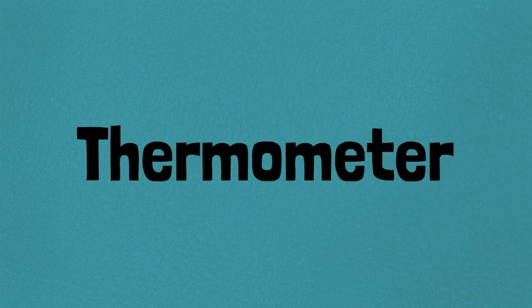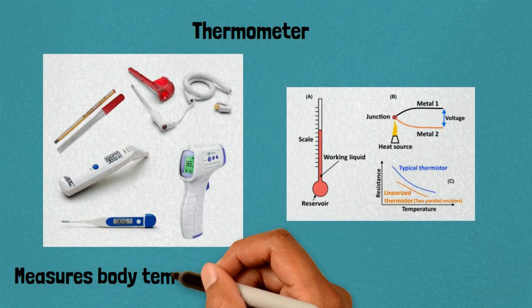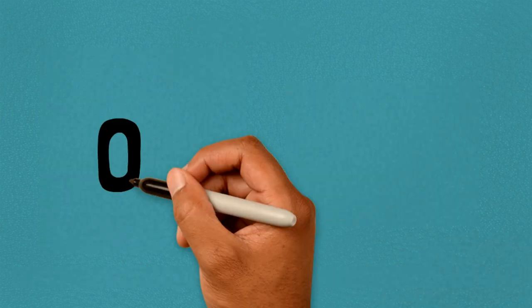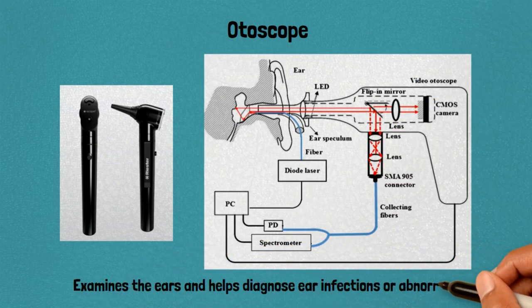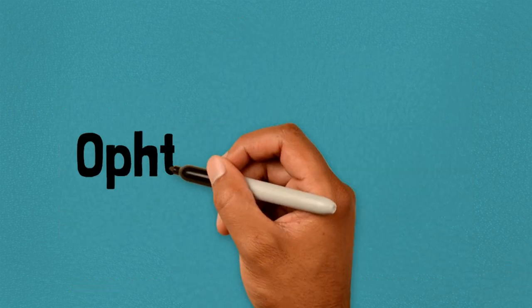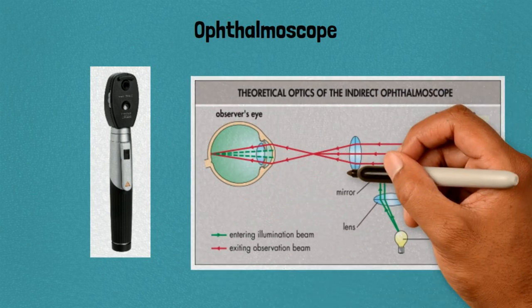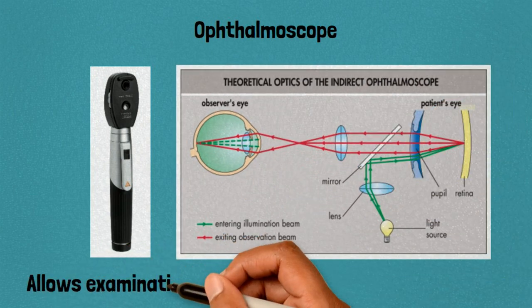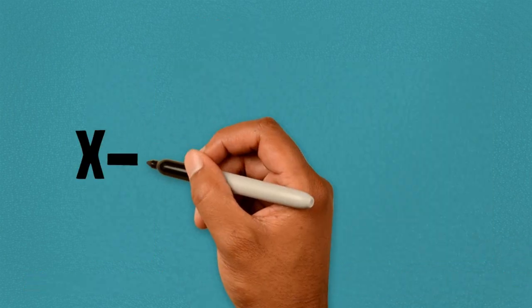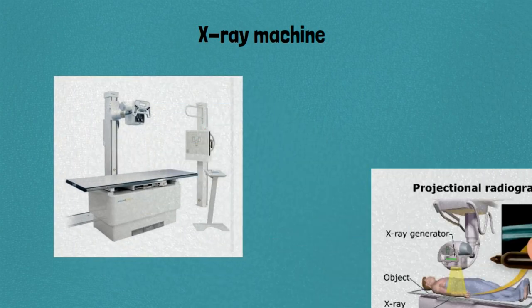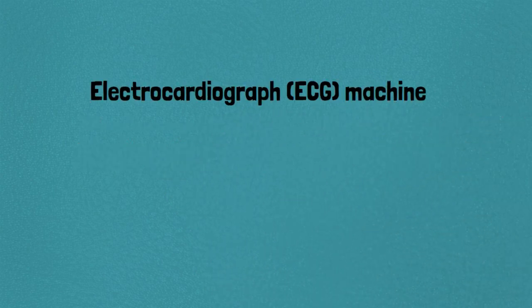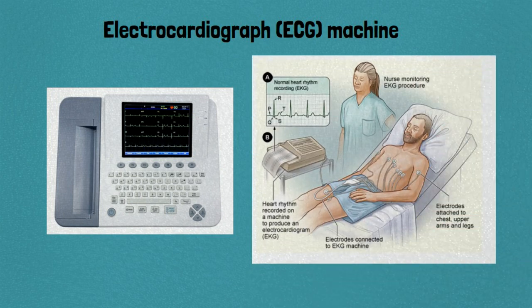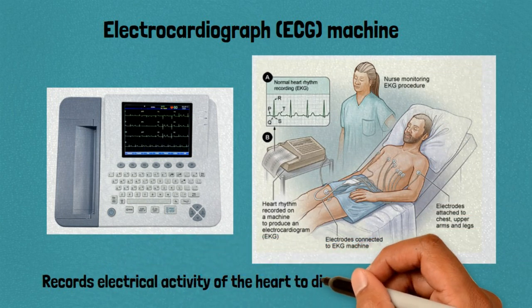3. Thermometer: measures body temperature to detect fever or hypothermia. 4. Otoscope: examines the ears and helps diagnose ear infections or abnormalities. 5. Ophthalmoscope: allows examination of the eyes to identify eye conditions. 6. X-ray machine: produces images of internal structures to identify bone fractures and lung diseases.